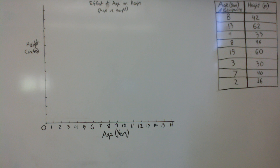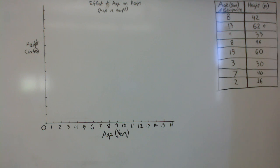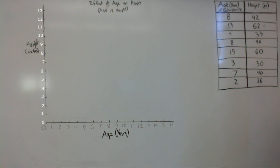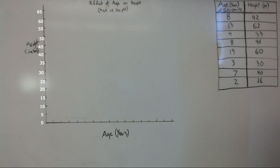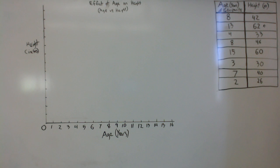Do the same for the other variable. The tallest height in the data table is 62 inches, so the height axis needs to count up to at least 62. Counting by ones won't make it to 62, and counting by twos won't work either. It isn't until you count by fives that you reach past 62, so add those in.